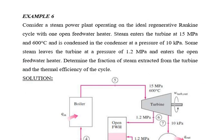We have already discussed the complete cycle of the feed water heater and the ideal regenerative cycle. Now we take a numerical example based on this. Consider a steam power plant operating on the ideal regenerative Rankine cycle with one open feed water heater. Steam enters the turbine at 15 MPa and 600 degrees Celsius and is condensed in the condenser at a pressure of 10 kPa.